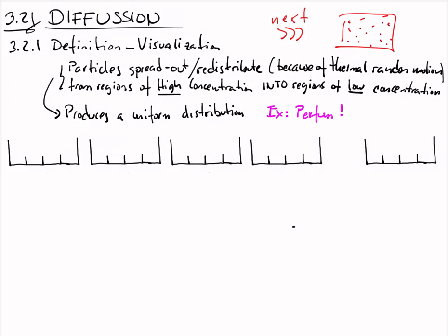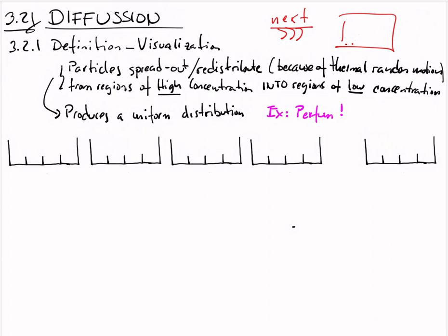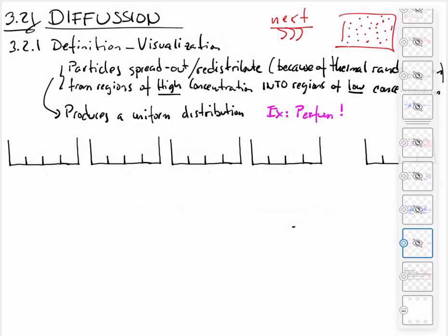We are going to see the process called diffusion — we'll define it and visualize it. We have particles that spread and redistribute, and this is due to random thermal motion. We have regions of high concentration and, hours later, these particles are redistributed. This produces a uniform distribution — for example, like a perfume dispersing in a room.